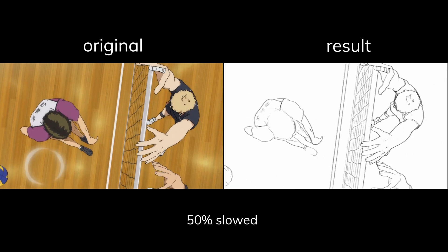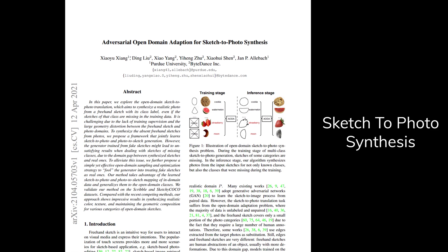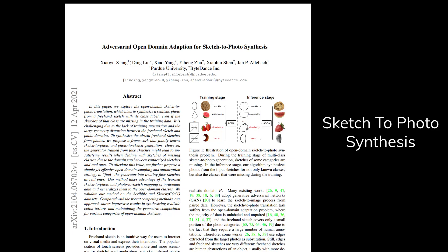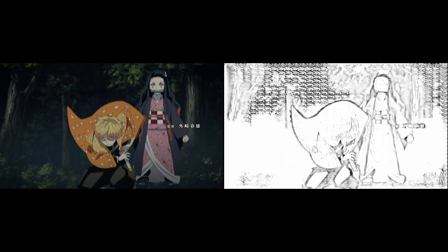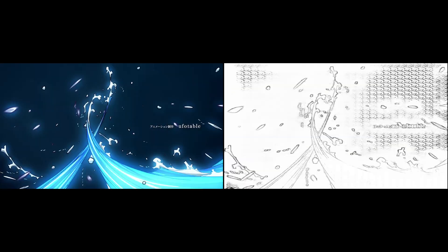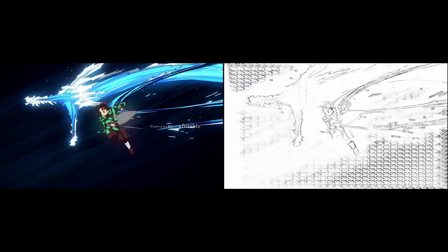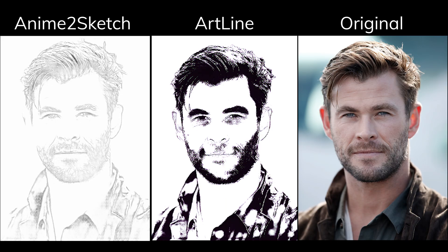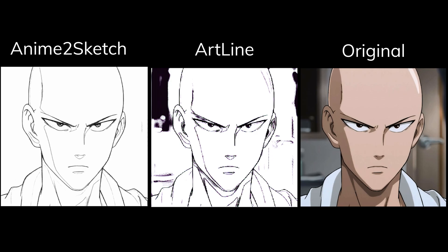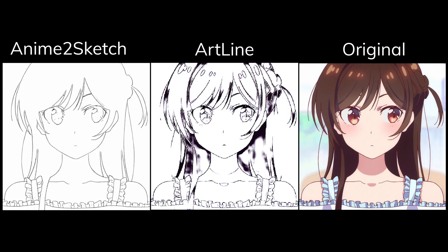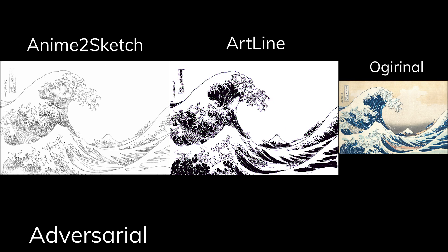This anime-to-sketch AI actually came from a research paper on sketch-to-photosynthesis, and the anime-to-sketch is just an application of it, while remaining impressive on its own. Compared to older outline extraction AIs like Artline, which I covered before, the major improvement for this edge detection function attributes to a technique introduced in the research paper called adversarial open domain adaptation.